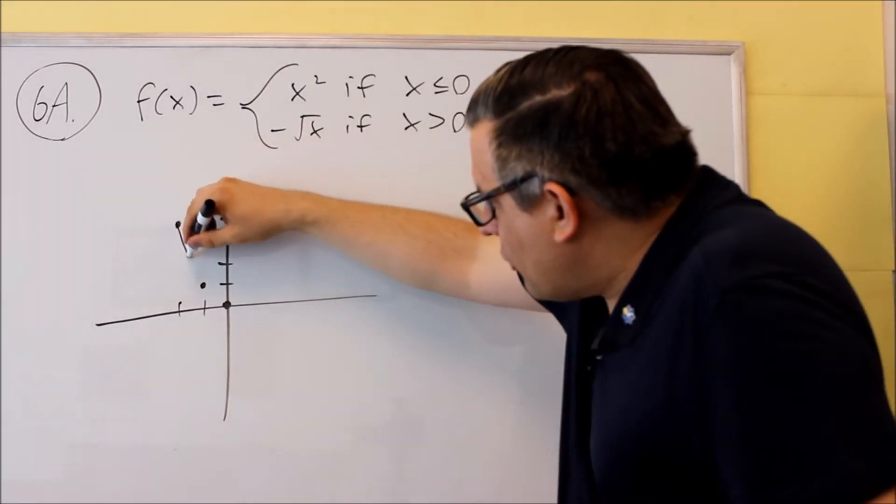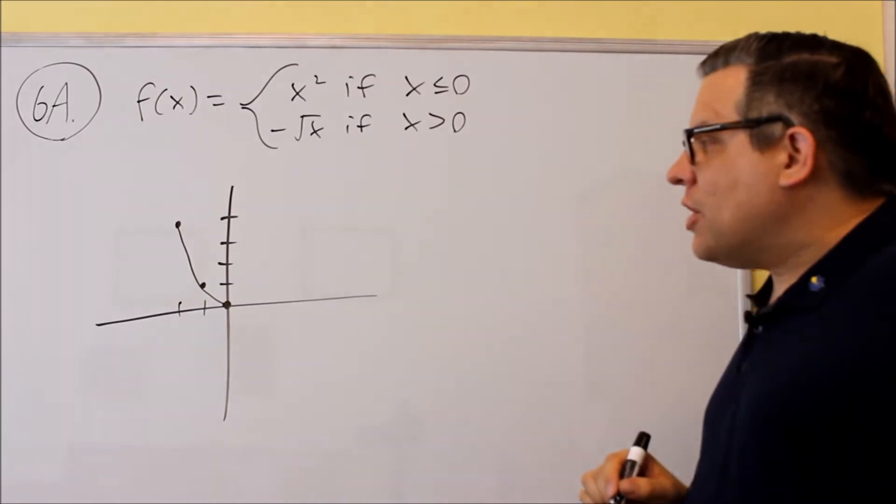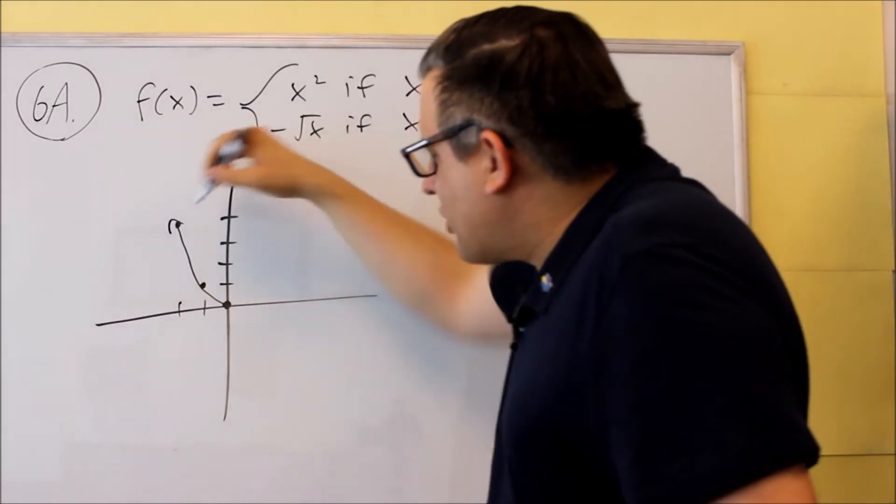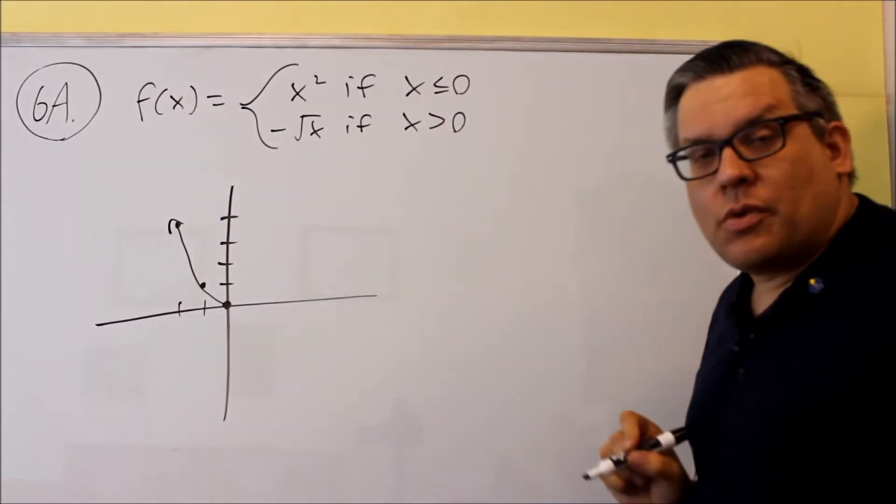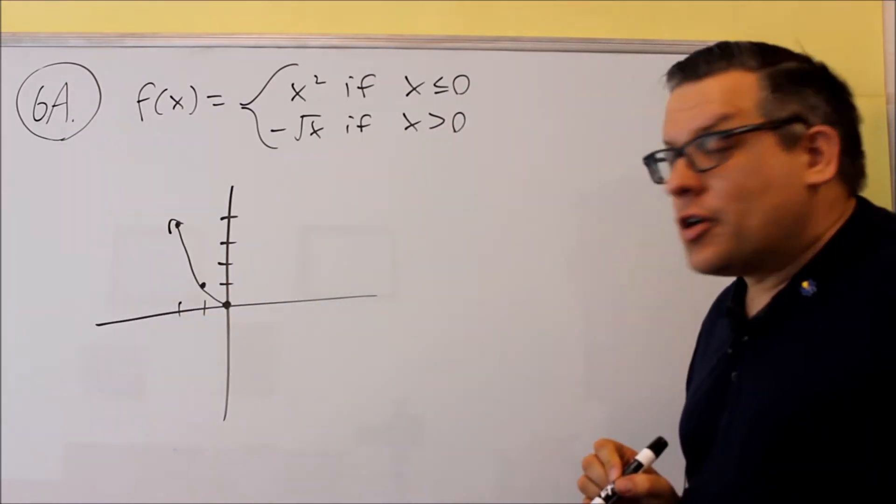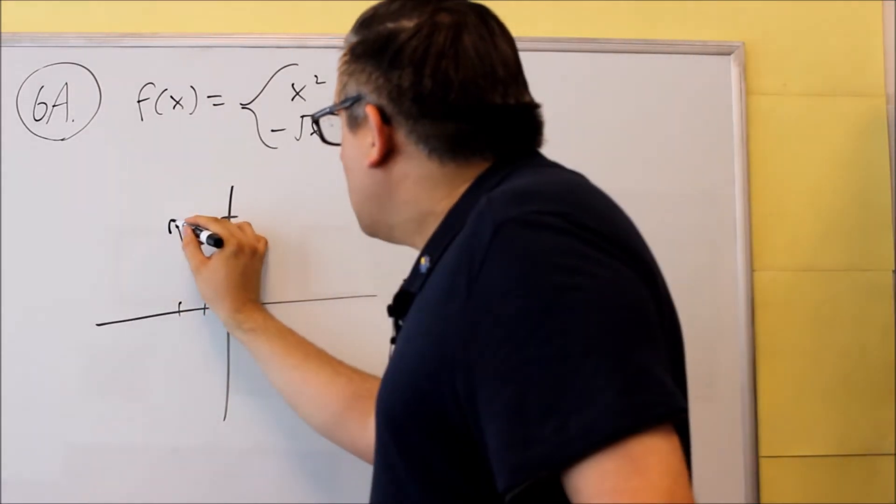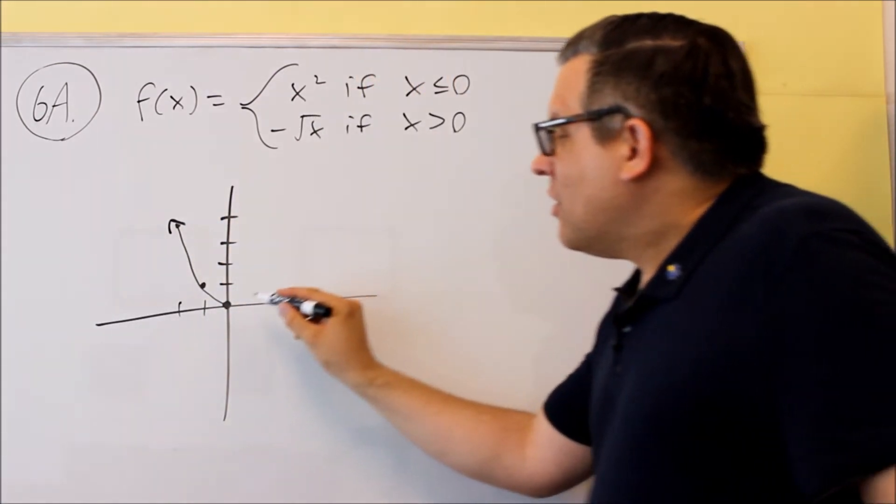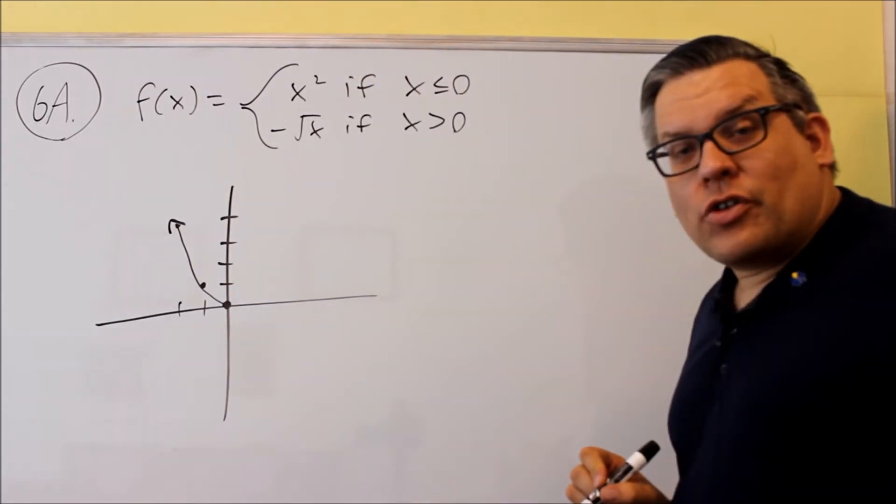So the first part of the graph is going to just look like this. And that's going to keep going that way because we can keep going because we're using all the values that are less than or equal to 0. The graph is going to look like that. It's the left-hand portion of the u-shaped graph.